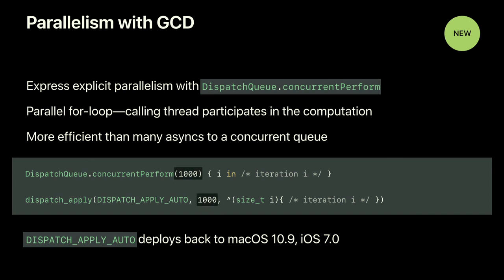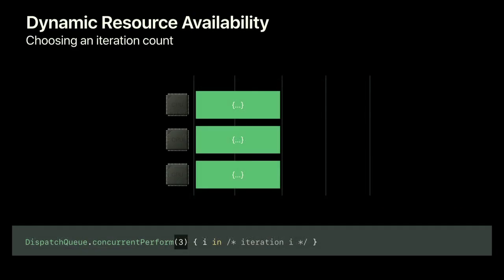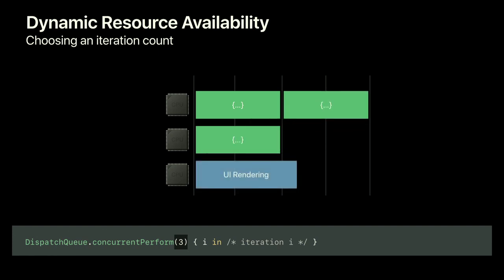Now let's look at the iteration count parameter — how many times your block is called in parallel. You might imagine a good value would be the number of cores. On a three-core system, three blocks run in parallel ideally, but the real world isn't perfect. If one core is taken up by UI rendering, the load balancer has to move that block to another core, creating a bubble of idle CPU. We could have taken advantage of that time. Instead, our workload took longer.